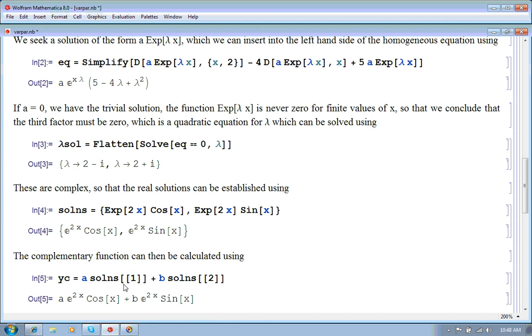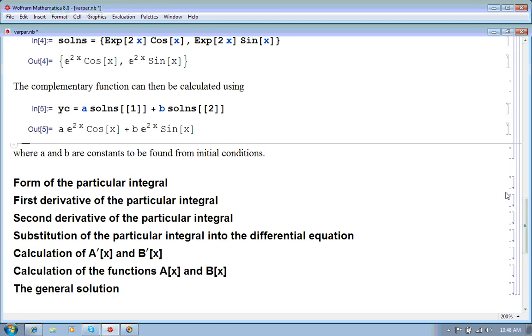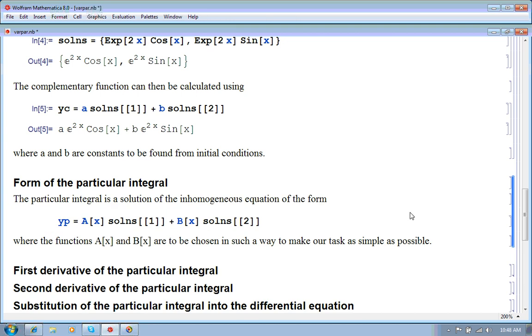where a and b, little a and little b are constants we have to find. So, let's now set about trying to find a particular integral. Well, the method of variation of parameters takes the two solutions of the homogeneous equation and multiplies them by two unknown functions, capital A of x and capital B of x. So, the particular integral has this form.